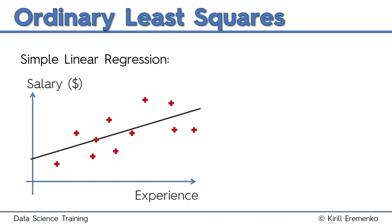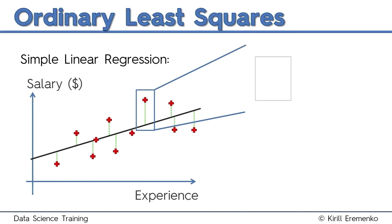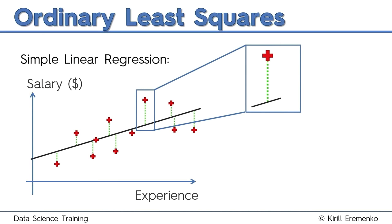Here's our simple linear regression chart — salary versus experience. We have red dots which represent the actual observations in our data, and we have the trend line which represents the best fitting line or the simple linear regression model. Now let's draw some vertical lines from the actual observations to the model. For example, a person with 10 years of experience earning $100,000 — the model line tells us where that person should sit according to the model, perhaps around $80,000.